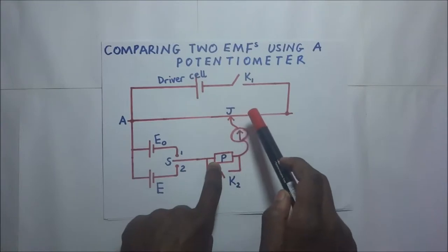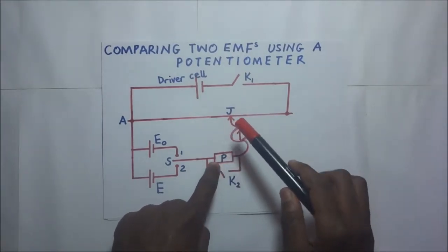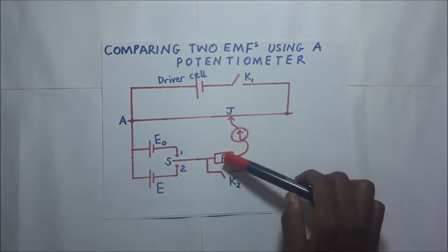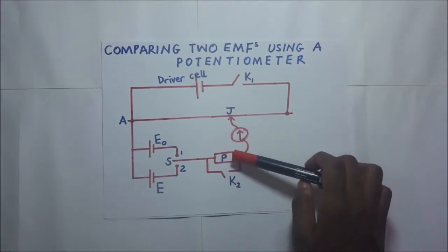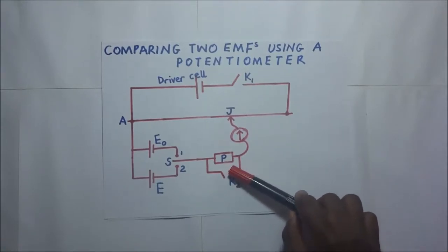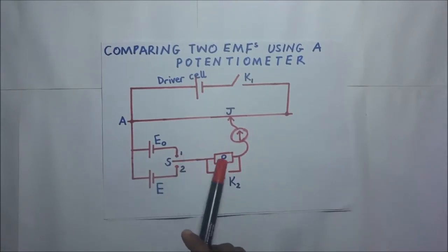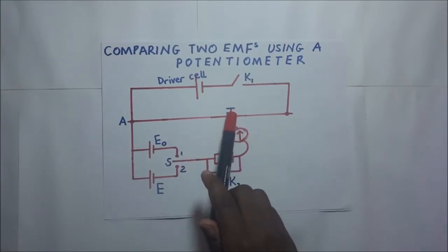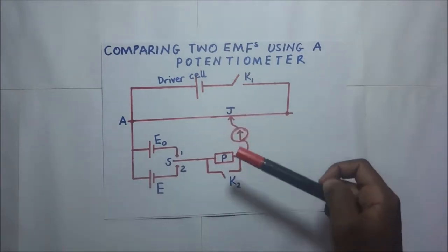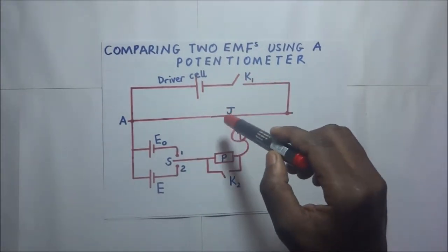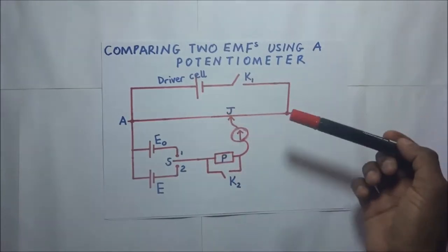When we get the balance point while the protective resistor is in the circuit, that balance point is just an approximate one. Then we go ahead and get the accurate balance point by removing this protective resistor out of the circuit. We remove it by simply closing switch K2, which causes current to bypass the resistor directly into the galvanometer. The balance point obtained after this is the accurate one.